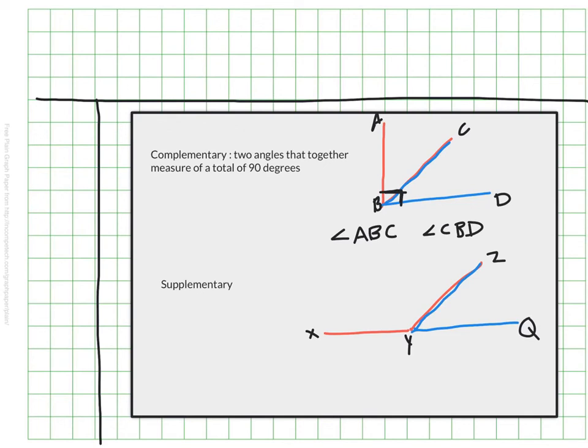Two angles can also be considered supplementary when they add up to a total of 180 degrees. So when they combine to make the measurement of one straight line.